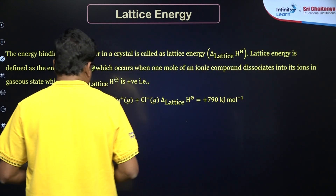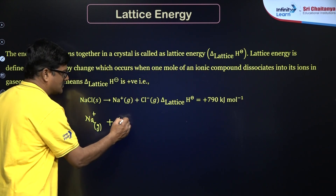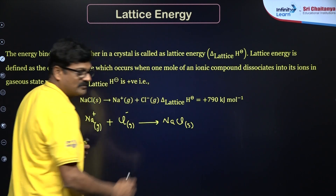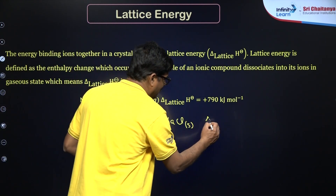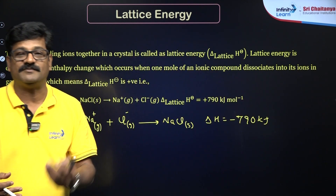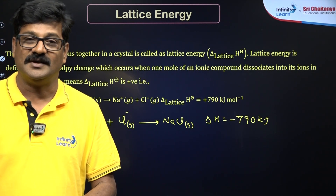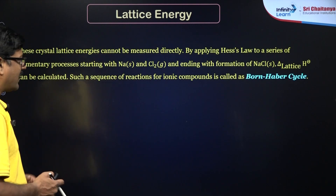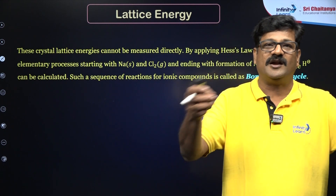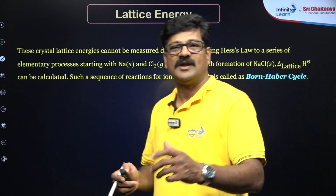You can also express this in the reverse way: Na⁺ in the gaseous state and Cl⁻ in the gaseous state gives rise to sodium chloride in the solid state, where ΔH equals negative 790 kJ. So the amount of energy released when 1 mole of ionic lattice is formed from its constituent gaseous ions is called lattice energy. It is impossible to calculate lattice energy directly because you cannot get these isolated gaseous ions into a calorimeter. So we use the indirect method — that is the Born-Haber Cycle.